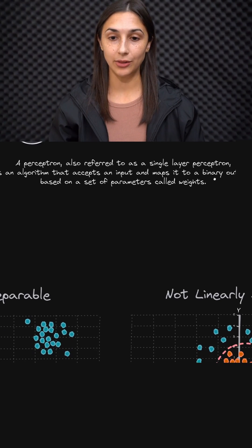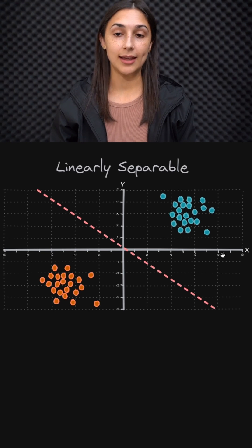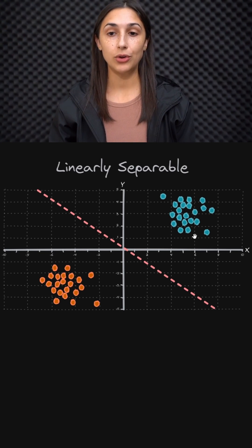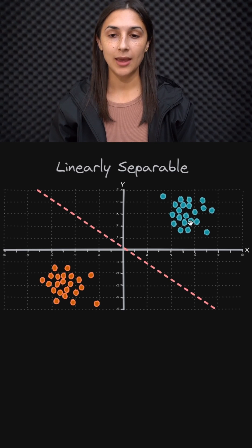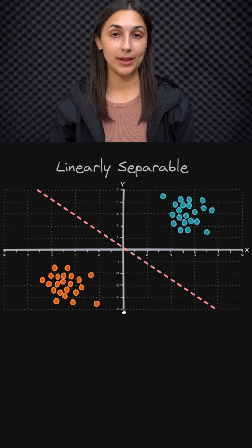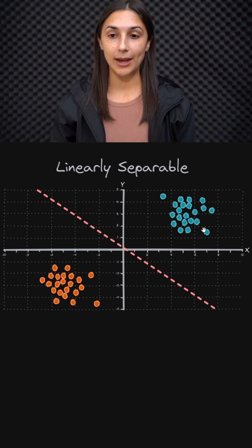Linearly separable is intuitively illustrated when we have two different groups of data and we can separate those groups with a line. So for our simple example that we just illustrated, we can imagine that this is the group of folks who can squat more than their body weight, this is the group who can squat less.